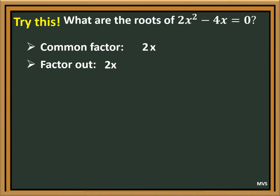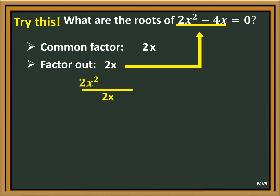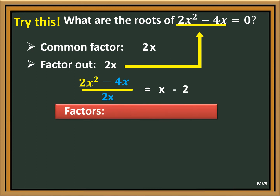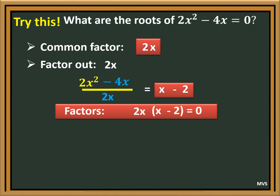Next, factor out by dividing the greatest common factor from 2x squared minus 4x. 2x squared divided by 2x is equal to x. Negative 4x divided by 2x is equal to negative 2. Therefore, the factors are 2x times the quantity x minus 2, is equal to zero.